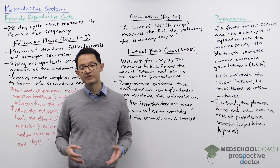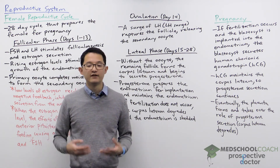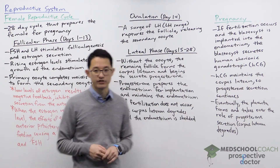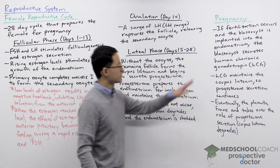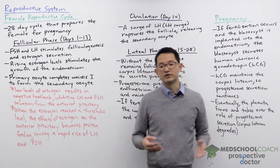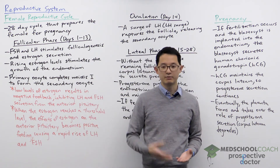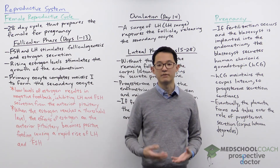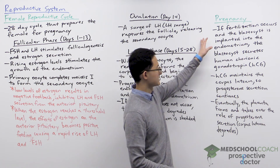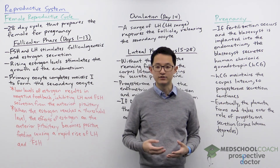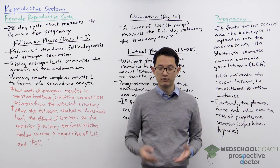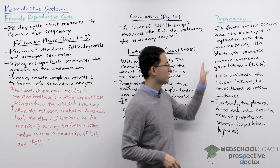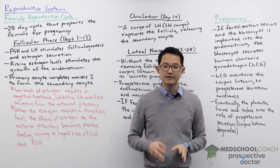This describes the process when fertilization does not occur. If fertilization does happen, fertilization involves the fusion of an egg cell and a sperm cell, forming a zygote that undergoes several developmental stages to form the blastocyst. The blastocyst is what implants into the endometrium, and once implanted it will begin to secrete human chorionic gonadotropin, HCG.